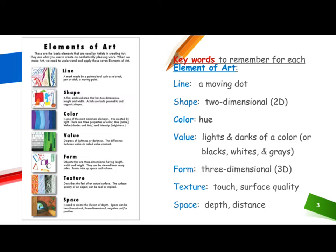There are three properties of color: hue (the name), value (shades and tints), and intensity (the brightness). Number four — value: degrees of lightness and darkness. The difference between values is called value contrast.